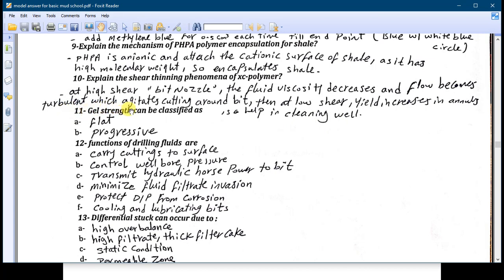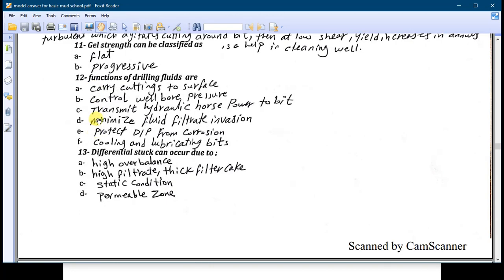Number eleven: the gel strength can be classified as flat or progressive. The progressive it depends on the reading between the 10 minutes and the 10 seconds. Number twelve: what are the functions of the drilling fluids? Too many functions: control the well bore, carry the cutting to the surface, transmit hydraulic horsepower to the bit, minimize fluid filtration invasion, cooling and protect from the corrosion.